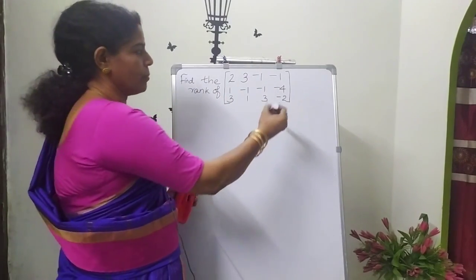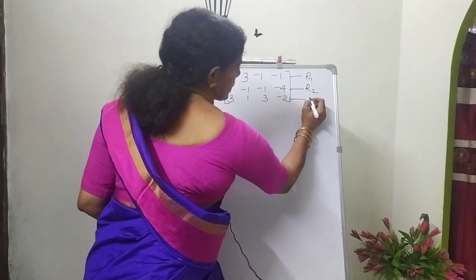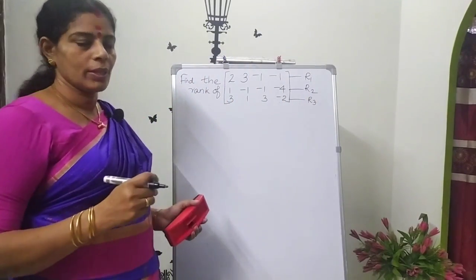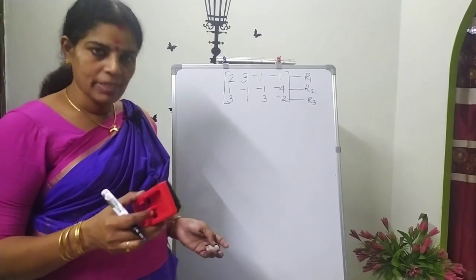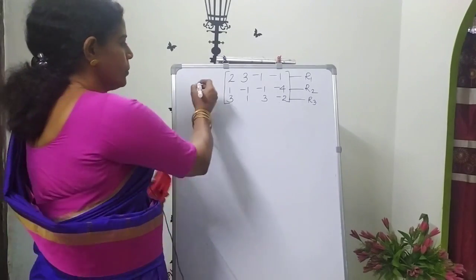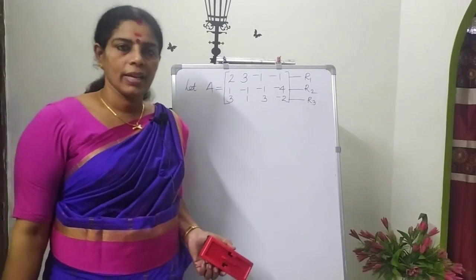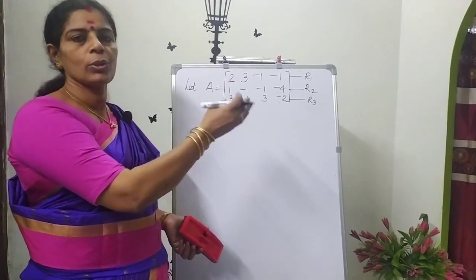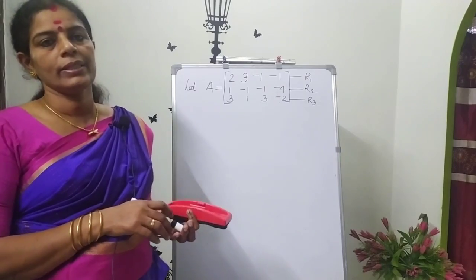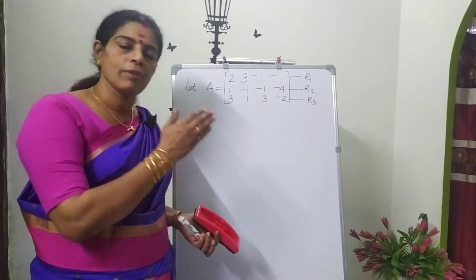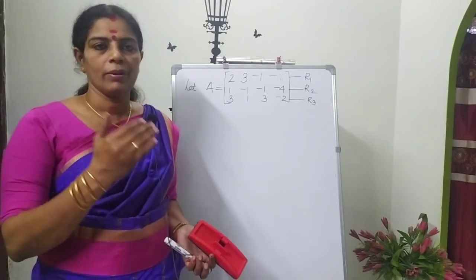We have R1, R2, and R3. We are going to apply the transformation — we have to convert the matrix into echelon form, then find the rank. We have to find the rank in part 1 and part 2.